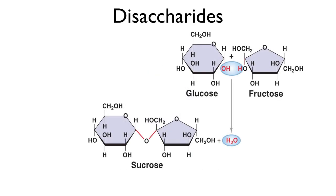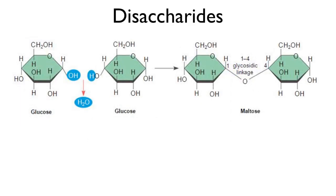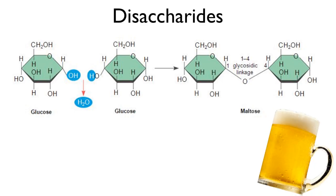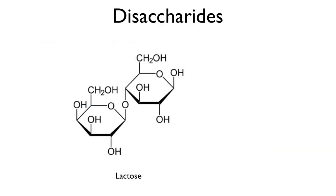If you take two monosaccharides and you join them together in a reaction called dehydration synthesis, you get a disaccharide. Di just means two, and sucrose is what you know as table sugar. Another disaccharide: if you take two glucose monomers and join them together in a particular way, you get maltose, or malt sugar, which you know from beer. Another disaccharide is lactose, or milk sugar.